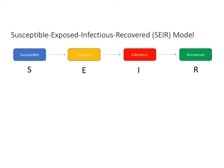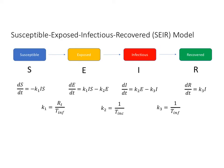A Susceptible-Exposed-Infectious-Recovered model, or SEIR model for short, considers people to be in one of four categories: Susceptible, Exposed, Infectious, or Recovered. We consider the relative populations using a series of differential equations — for the change in the susceptible population, the exposed population, the infectious population, and the recovered population as functions of time. These are all related to one another by the parameters S, E, I, and R and the rate constants k1, k2, and k3.